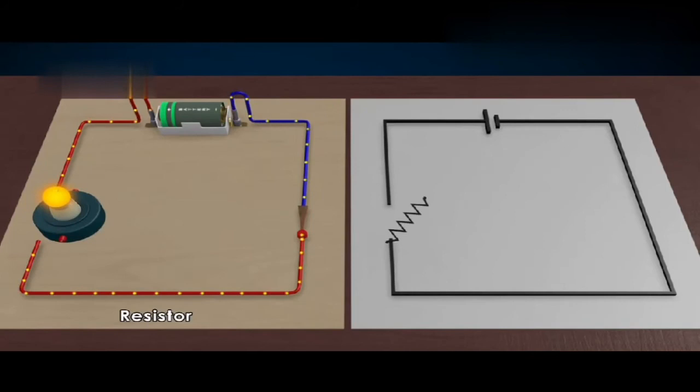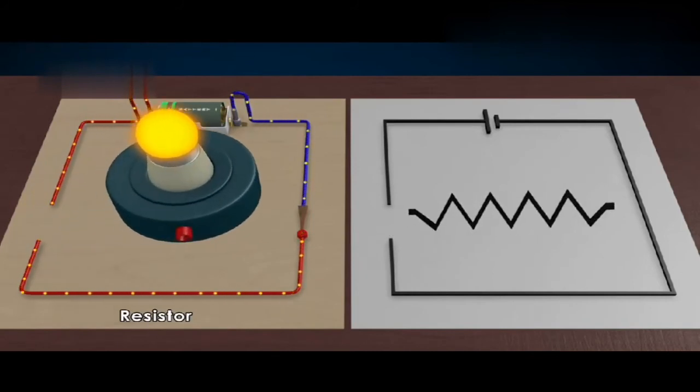A resistor which is a device that resists electrical flow will be indicated by zigzag lines. A resistor may also be a light bulb.